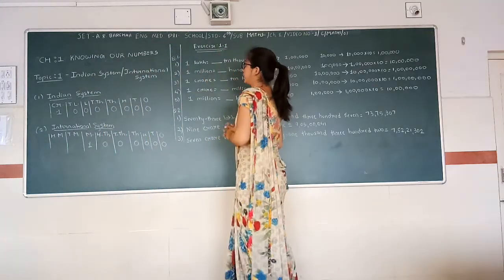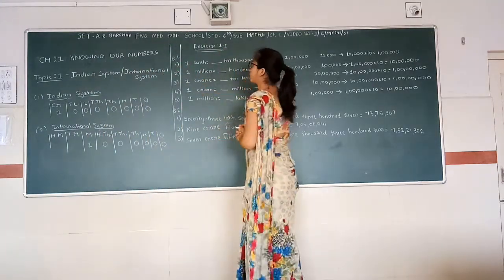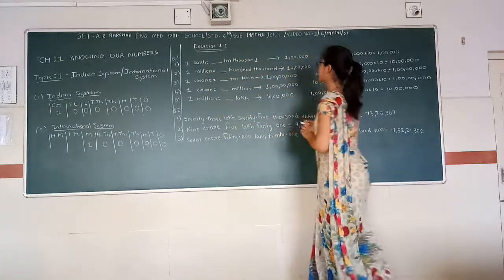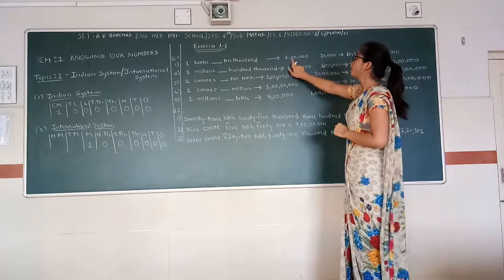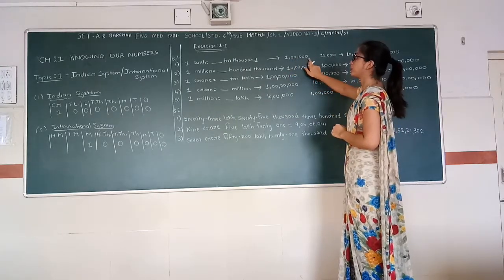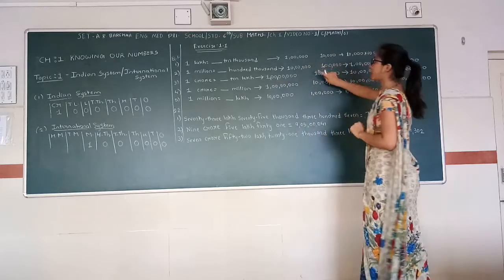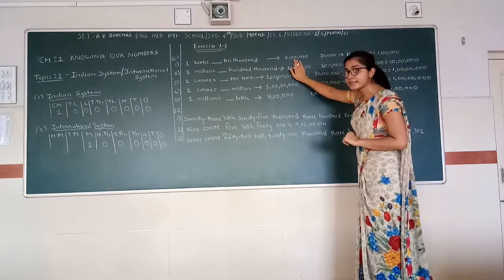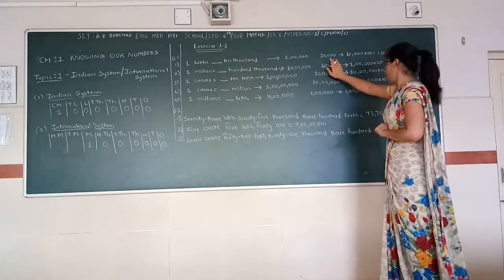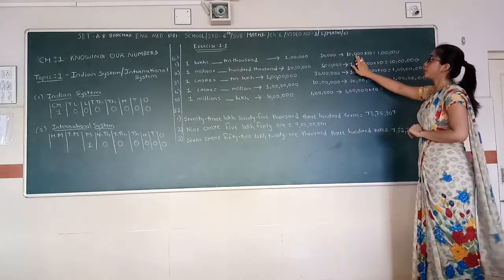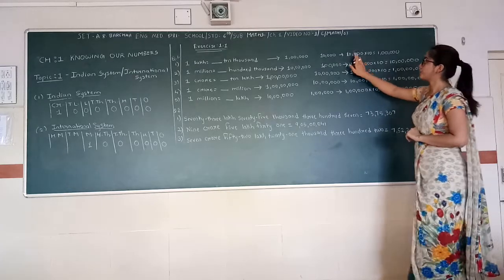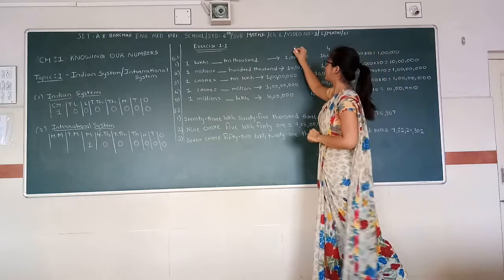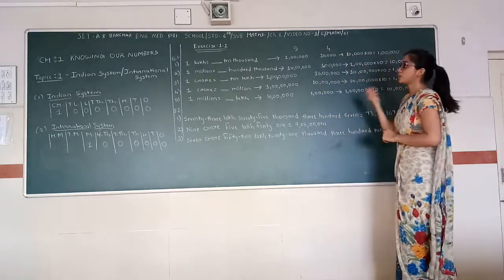Let's do exercise one, question one. One lakh is equal to how many ten thousands? In one lakh we have five zeros, and in ten thousand we have four zeros. So what we have to do is multiply ten thousand by ten, because here we have four zeros and there we have five.